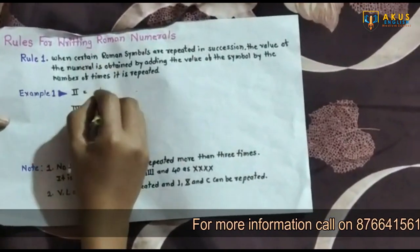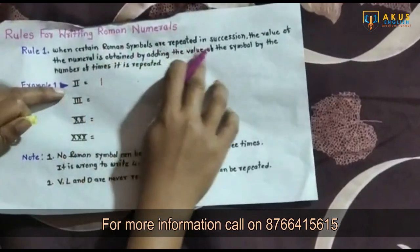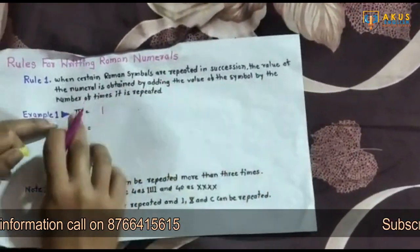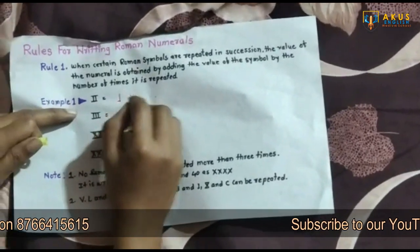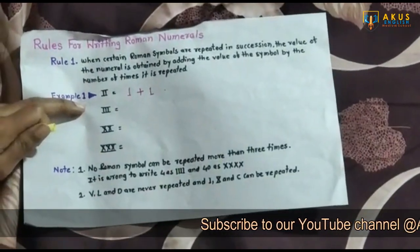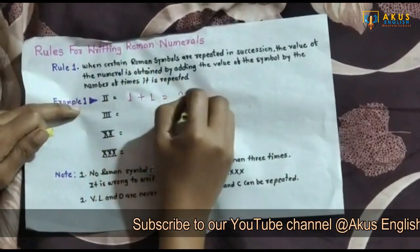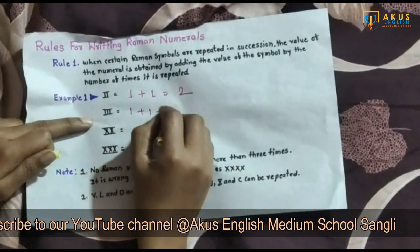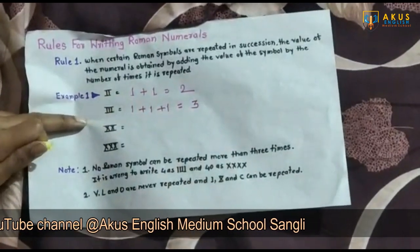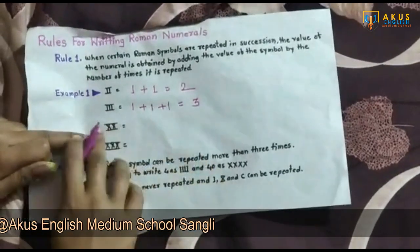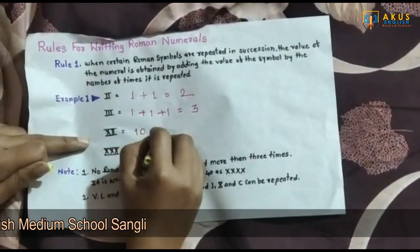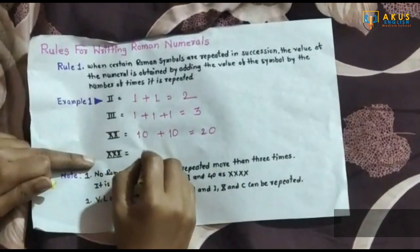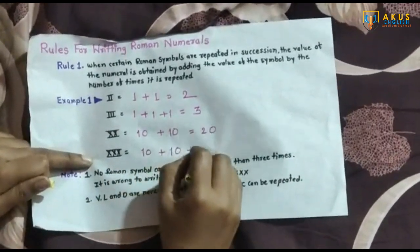When symbols are repeated in succession, we add their values. So two times I equals 1 plus 1, which is 2. Three times I equals 1 plus 1 plus 1, which is 3. X represents 10, so two times X equals 10 plus 10, which is 20. Similarly, three times X equals 10 plus 10 plus 10, which is 30.